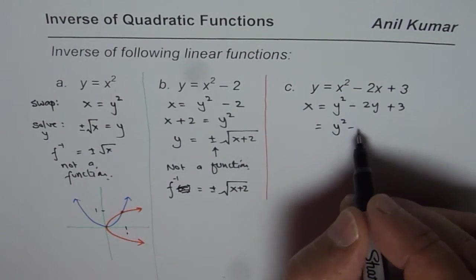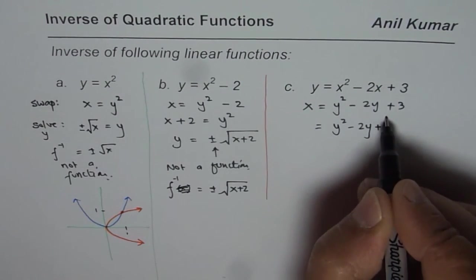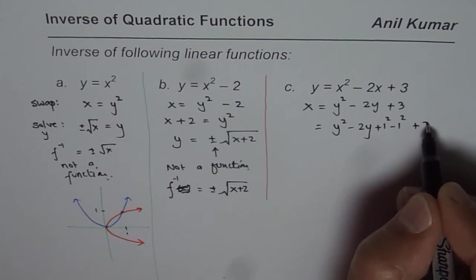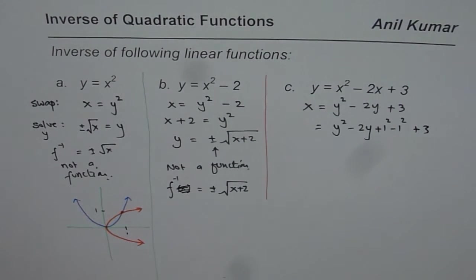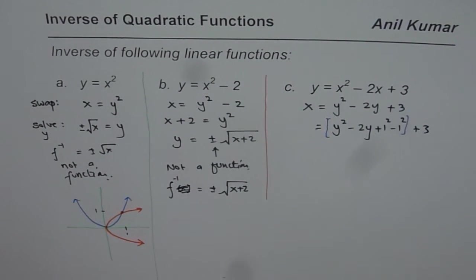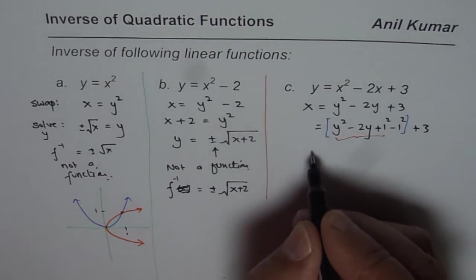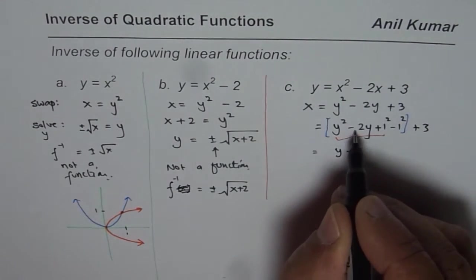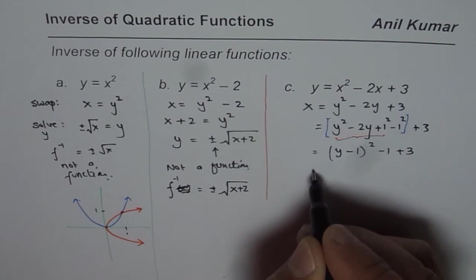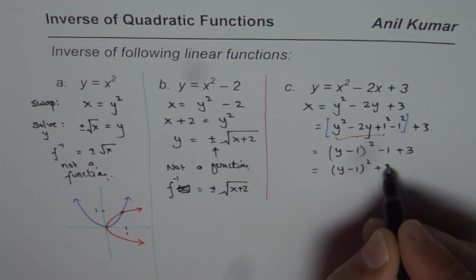To complete the square, take half of the coefficient of y — which is 1 — and subtract its square. Writing it as 1 squared minus 1 squared makes it clear this is half of 2. The first three terms form a perfect square: (y minus 1) squared. Then we have minus 1 plus 3, giving us x equals (y minus 1) squared plus 2.